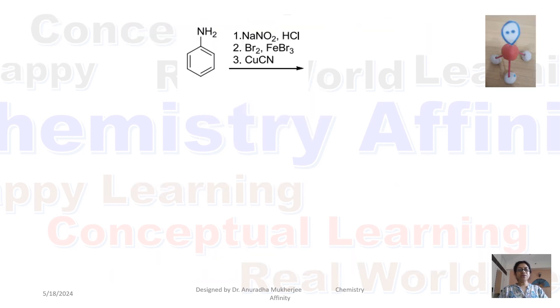Here aniline is treated with three different reagents. When aniline is treated with sodium nitrite and hydrochloric acid, we have to maintain 0 degree Celsius temperature. NH2 converts to N2 plus Cl minus, that means we are getting benzene diazonium chloride.